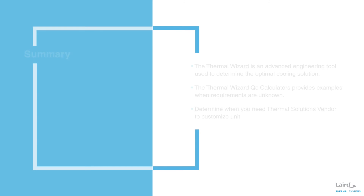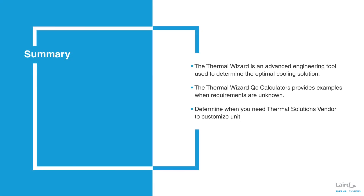In summary, the Thermal Wizard is an advanced thermal management tool that helps determine the optimum cooling solution based on your application requirements. When you don't know your cooling requirement, the Thermal Wizard's QC calculators provide pre-programmed examples for different applications. See Thermal Wizard training module number one for device cooling, training module number three for air cooling, and training module number four for liquid cooling. The Thermal Wizard not only provides standard solutions, it will also determine when you may need to engage with a thermal solution expert to customize a thermal solution.